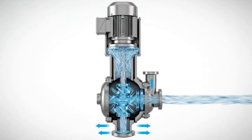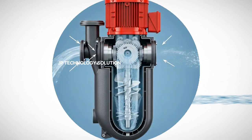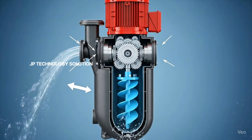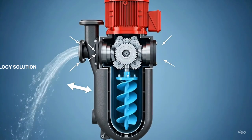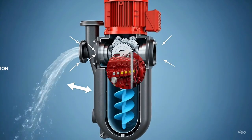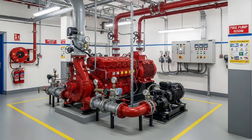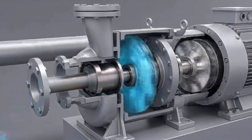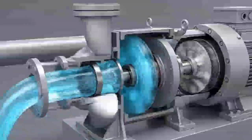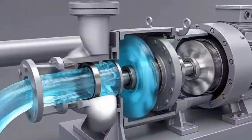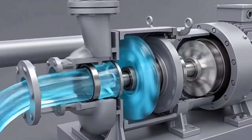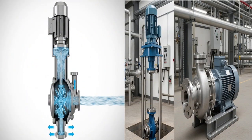In short, vertical pump advantages: saves floor space, good for underground water lifting. Disadvantages: more expensive and harder to maintain. Horizontal pump advantages: cheaper and easier to maintain. Disadvantages: takes more floor space and often requires priming.